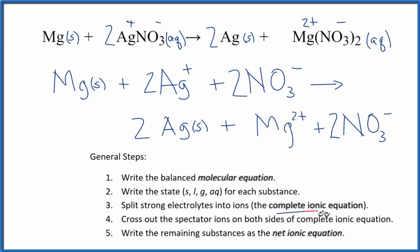This is what we call the complete ionic equation. So now what we can do is cross out what are called spectator ions. They appear on both sides of the equation. So we have the reactants and the products. We have Ag plus here. No. We have NO3 minus. We have two of those. We could cross those out.